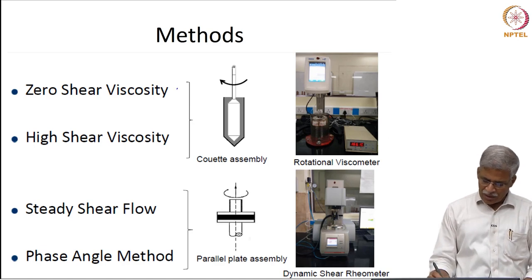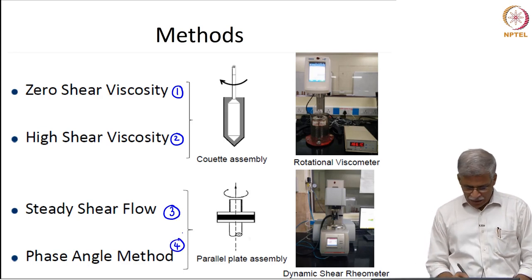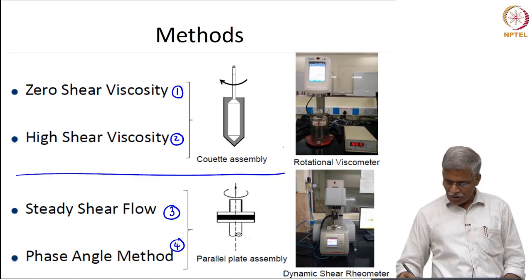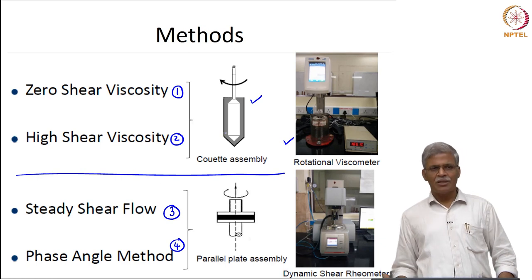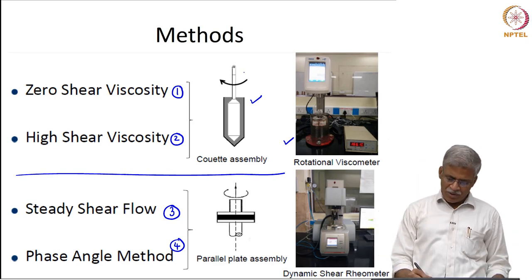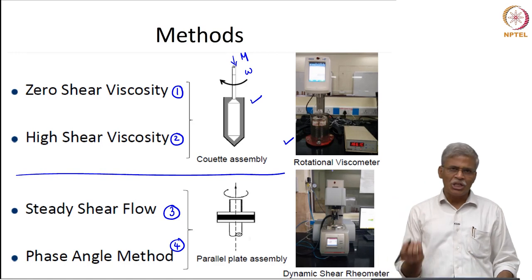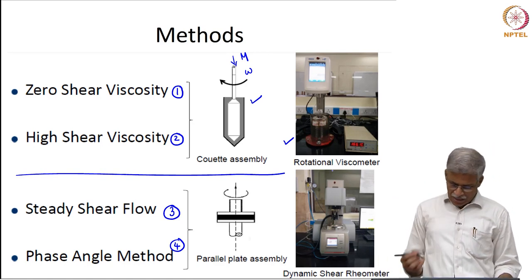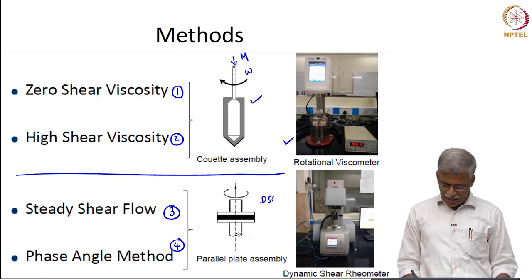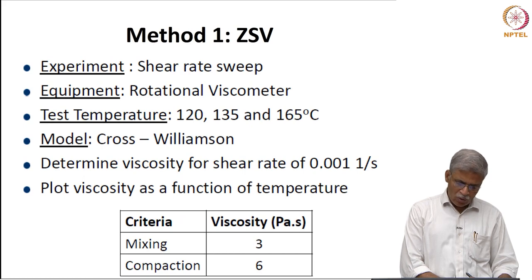The first method is what is really called zero shear viscosity and high shear viscosity. The second one is based on steady shear flow as well as the phase angle method. The first method uses a rotational viscometer with a coaxial assembly — you have a cup and a spindle inserted inside, subjected to an angular velocity, and the torque is used to compute shear stress while the angular velocity is used to compute shear rate, giving the viscosity. Similarly, a DSR dynamic shear rheometer with a parallel plate assembly is suggested. So four methods are suggested, and we will go through each one of them.